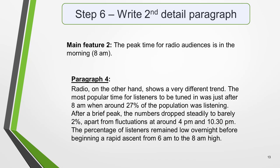For the fourth and final paragraph, you do the same thing for your second key feature. Our second main feature is: the peak time for radio audiences is in the morning at 8am. An example of what you could write: 'Radio, on the other hand, shows a very different trend. The most popular time for listeners to be tuned in was just after 8am, when around 27% of the population was listening. After a brief peak, the numbers dropped steadily to barely 2%, apart from fluctuations at around 4pm and 10:30pm. The percentage of listeners remained low overnight, before beginning a rapid ascent from 6am to the 8am high.'